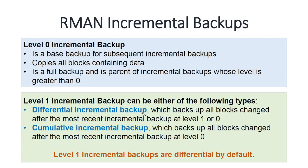A differential incremental backup backs up all blocks changed after the most recent incremental backup at level 1 or level 0. A cumulative incremental backup backs up all blocks changed after the most recent incremental backup at level 0. So the cumulative backup always refers back to the level 0 backup, whereas the differential backup can use either level 0 or level 1 as its base. By default, incremental backups are differential in nature.